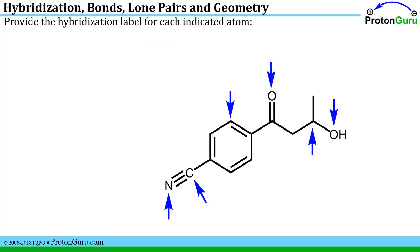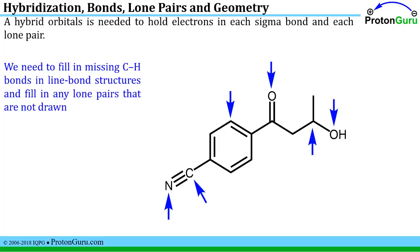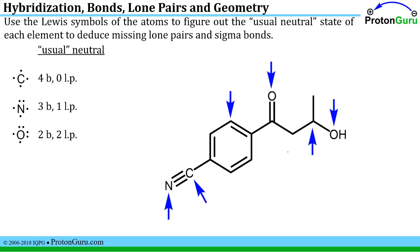Our first problem asks us to assign the hybridization label for each atom indicated by the blue arrows. To do this, we need to understand that hybrid orbitals are needed to hold electrons in sigma bonds and lone pairs. We need to fill in any missing carbon-hydrogen bonds and any lone pairs that are not drawn for us. It's useful to use the Lewis symbols to figure out what the usual neutral form of the atom is, so we can see how many bonds it should make and how many lone pairs it would have.